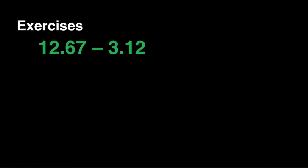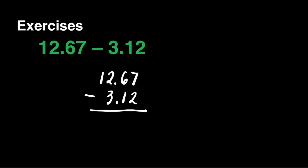We'll have some exercises. Let's have 12 and 67 hundredths subtracted by 3 and 12 hundredths. We have to make sure that the decimal points are aligned and we're ready to subtract. 7 minus 2 is equal to 5. 6 minus 1 is equal to 5. Don't forget your decimal point. 2 minus 3 cannot be, so we borrow from 1. The 2 will become 12, and 1 will become 0. 12 minus 3 is equal to 9. Our final answer is 9 and 55 hundredths.